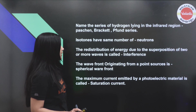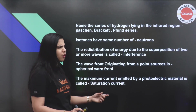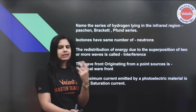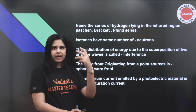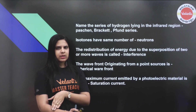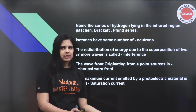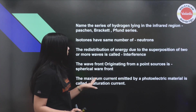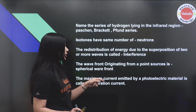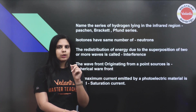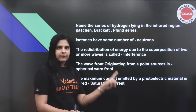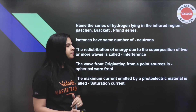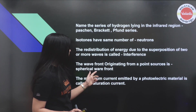The redistribution of energy due to the superposition of two or more waves is called interference. Interference involves constructive and destructive types, with maximum and minimum intensities. The wavefront originating from a point source is spherical.